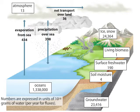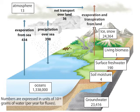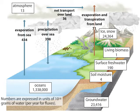Water also evaporates from the land, primarily from lakes and rivers, but also from the leaves of plants, a process called transpiration. This evaporated water joins the evaporated ocean water and precipitates back on land, replenishing the terrestrial water supplies.